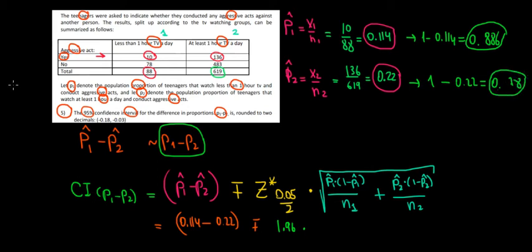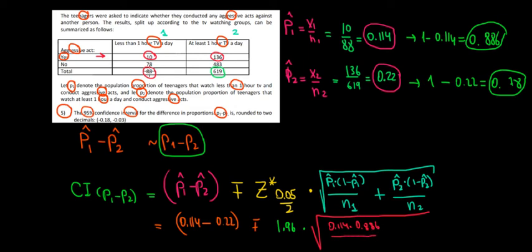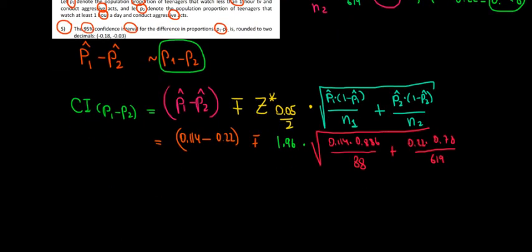Now with all the numbers in mind, we substitute. The difference is 0.114 minus 0.22. The critical value Z is 1.96. Under the square root we have: (0.114 × 0.886) / 88 plus (0.22 × 0.78) / 619. The first step is to solve this square root, then multiply by 1.96, and add and subtract from the difference — since this is done on a calculator.